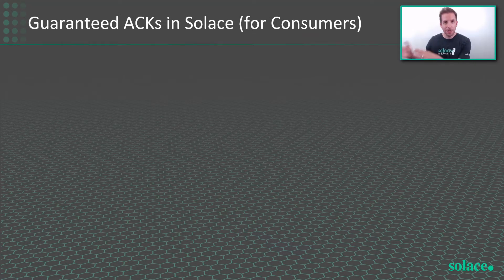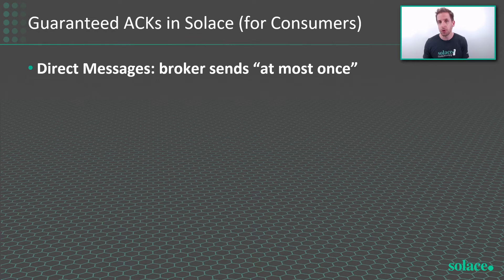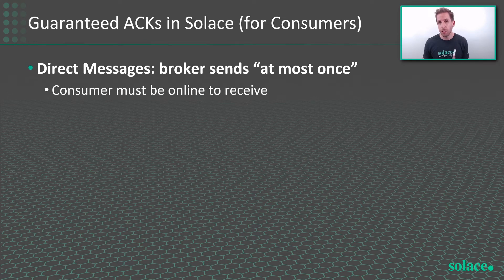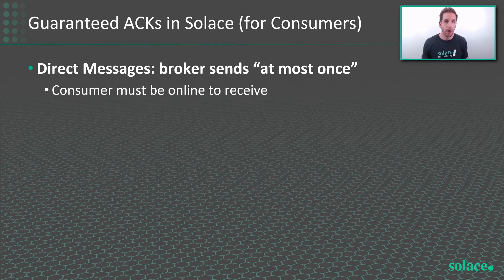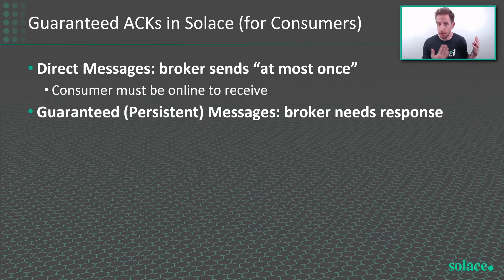That's enough for the publisher side — let's get back to consumers. Just like the publisher side, there are two different qualities of service or delivery modes in Solace for consumer applications. There's direct messaging, which is fire-and-forget, at-most-once, where the consumer actually has to be online and subscribed to receive messages. If the consuming application has disconnected from the broker for whatever reason, it's not going to receive messages sent as direct. But if you want to guarantee delivery, you'll use persistent or guaranteed quality of service, where the broker stores messages until the consumer sends the ACK.